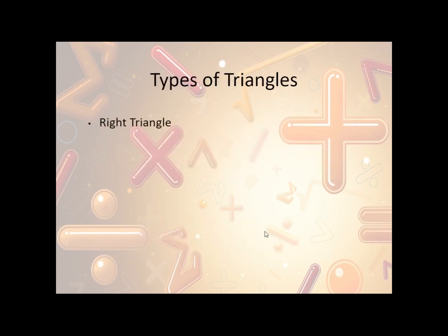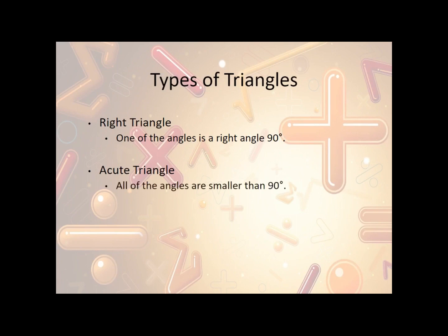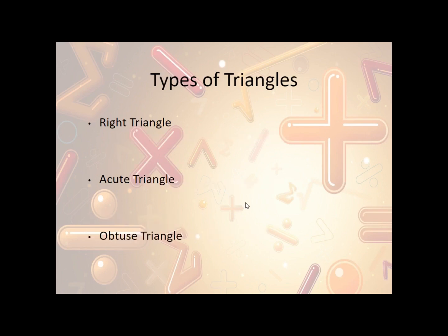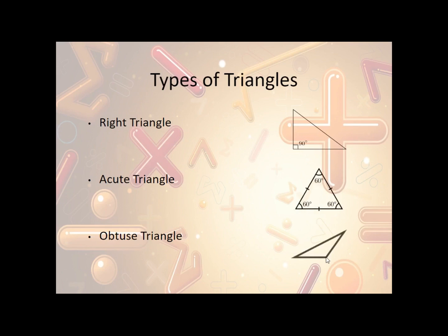Other types of triangles: we have right triangles, where one of the angles is a right angle, or a 90-degree angle. Acute triangles have all angles smaller than 90 degrees. And an obtuse triangle has one angle bigger than 90. A right triangle has a 90-degree angle right here. An acute triangle has all angles smaller than 90 — in this case they're all 60, but they just need to all be smaller than 90. And the obtuse triangle has a big angle that's definitely bigger than 90.